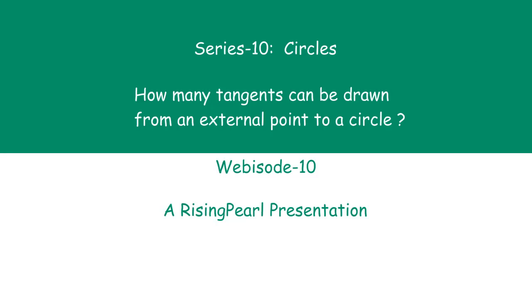Hello friends, welcome to risingpearl.com. Today we are talking about series 10 where we are learning a great deal on circles. This is webisode number 10 and today we are going to talk about how many tangents can be drawn from an external point to a circle. This webisode is more conceptual in nature because we want to make sure that you understand all aspects of circle and tangents. So let's get started.